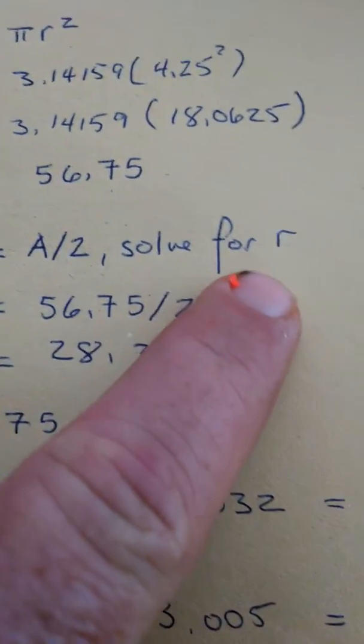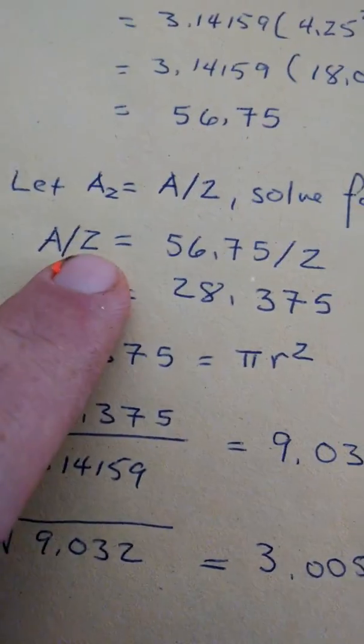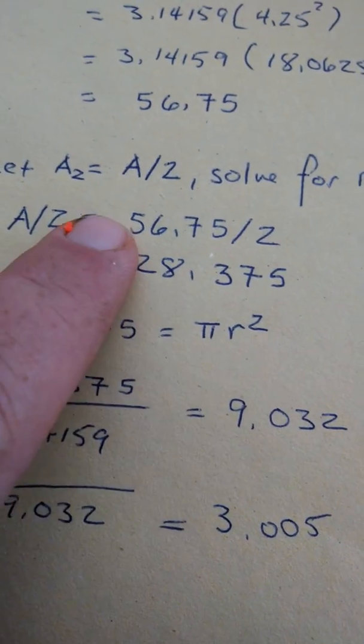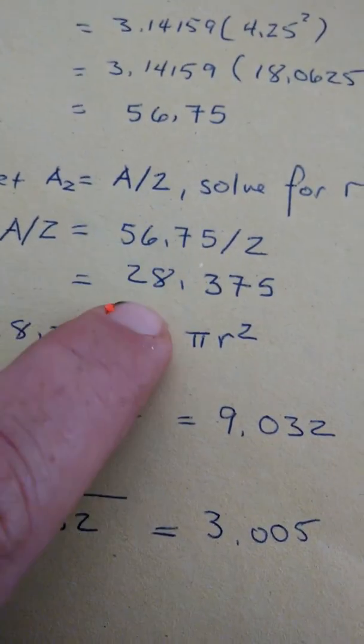Let area equal area by 2. Solve for R. There's area by 2. 28.375 is the area of a circle that is half of 56.75.